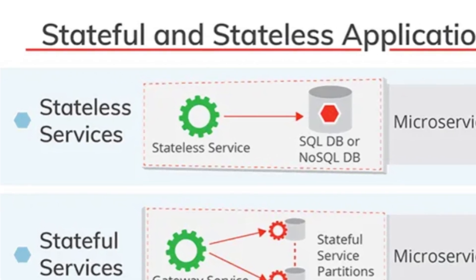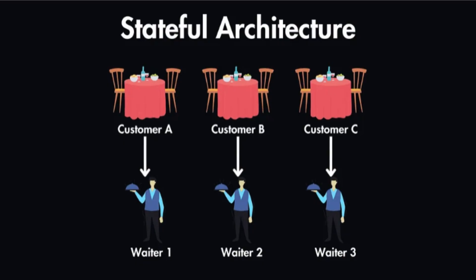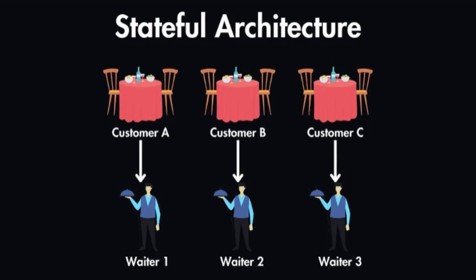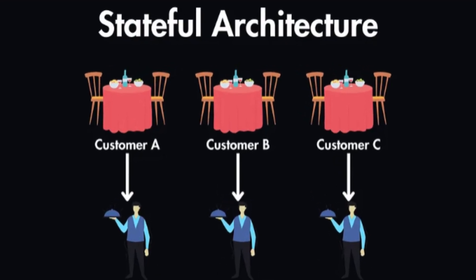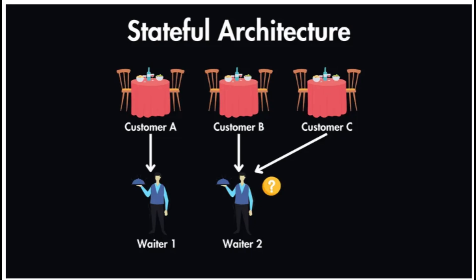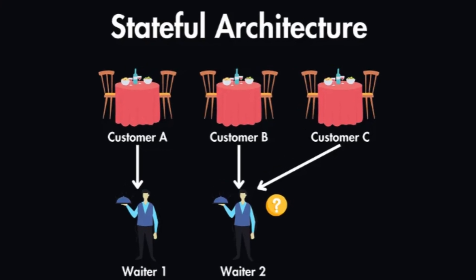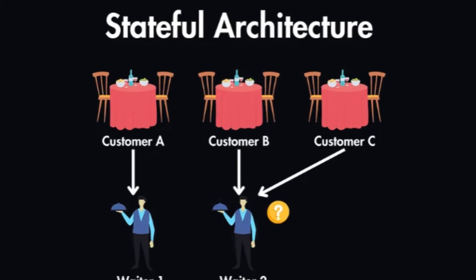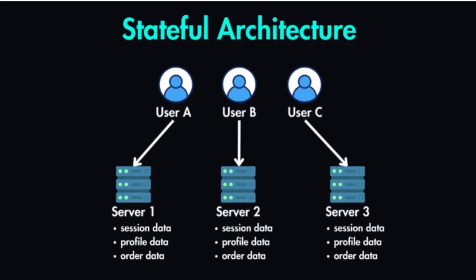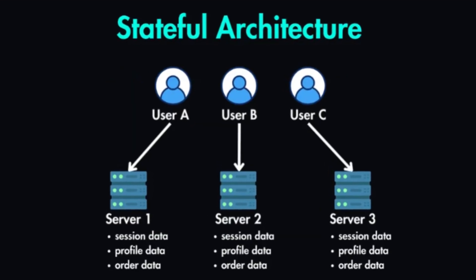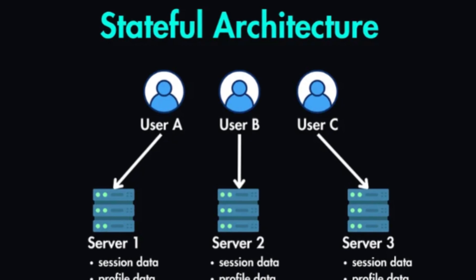Analogy: Think of an ongoing phone conversation. Both participants remember what's been said previously, and the conversation progresses based on that shared history. If you hang up and call back, you typically have to start a new conversation unless the system explicitly saves the state of the previous call, like a voicemail.